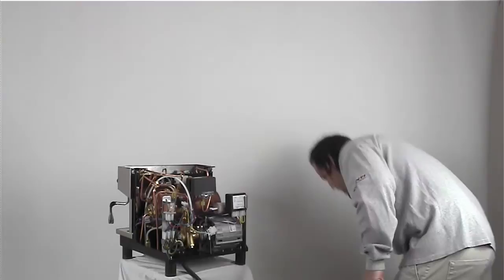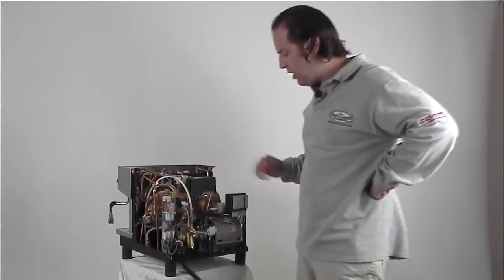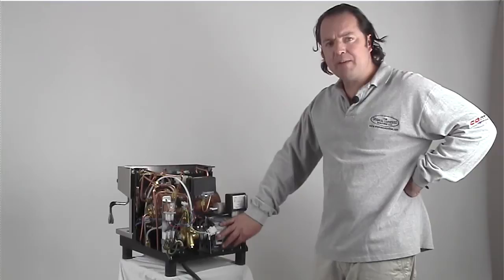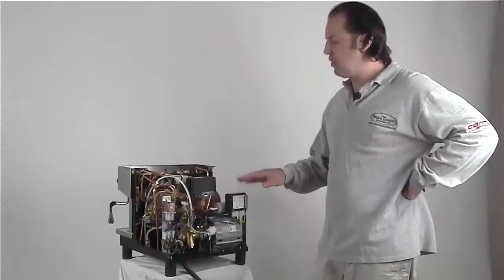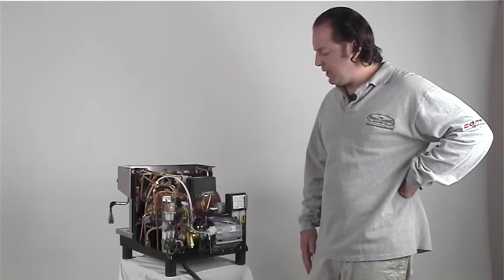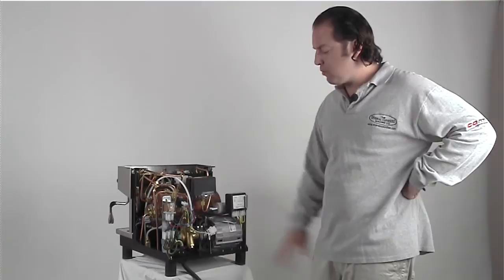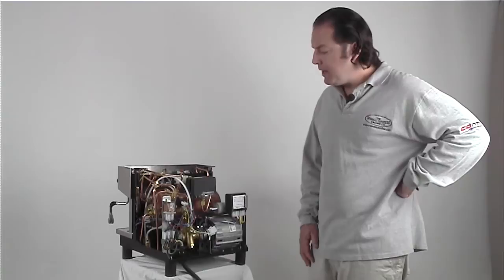You can see in the back of the machine a couple things that are exposed right from the get-go. Number one is a full-size rotary vane pump. On the cheaper or less expensive machines that you see out there, so-called commercial machines, this is where you usually see a downturn in quality—they go with a small vibration pump. What's nice about this one is it's a full-size rotary vane motor. The motor is actually very substantial, very strong.